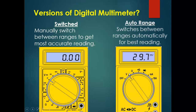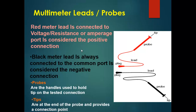In a multimeter we have red and black leads. The red lead is connected to the voltage, resistance, or ampere port of the multimeter and is considered to be the positive terminal. Similarly, the black lead is connected to the common port of the multimeter and is considered to be the negative terminal.